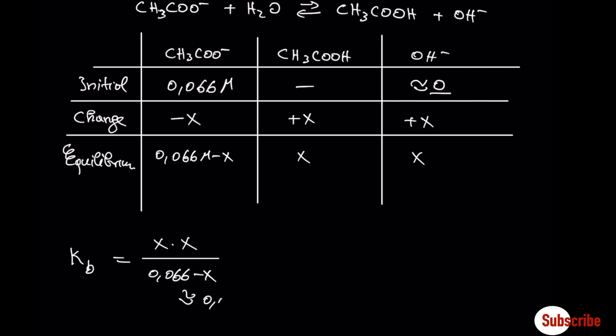Here, we have to make a simplification by respecting the rule of 5%. This value, we found it before. From here, we have to find the x, that is the concentration of OH minus actually.